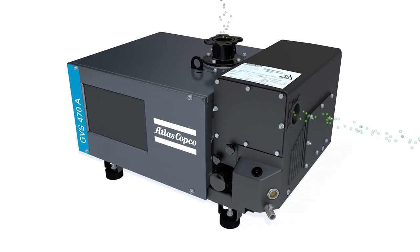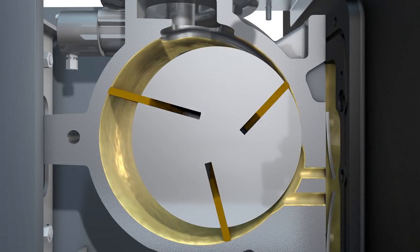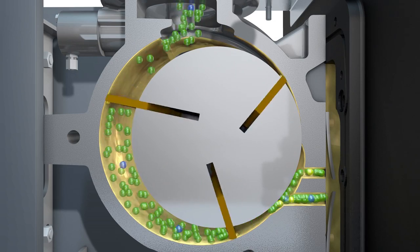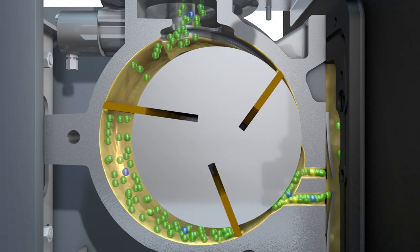As the rotor starts spinning, centrifugal force makes the vanes slide to the outside and seal against the stator housing. A volume of processed gas gets drawn in through the inlet valve as the rotor turns. This volume is then isolated from the process side and the exhaust.